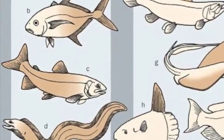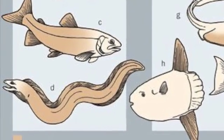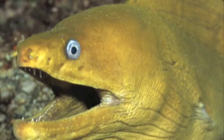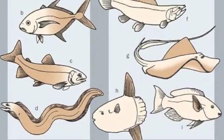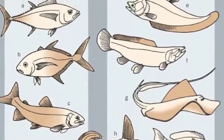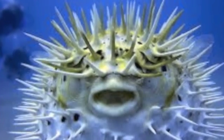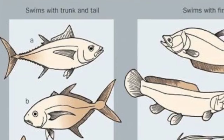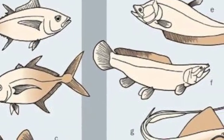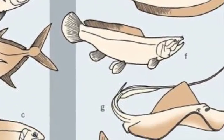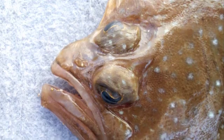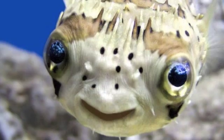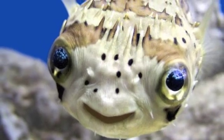Some fish are string-like, like the eel, or globe-shaped, like the puffer, or greatly flattened, like the flounder. Some fish lack eyes, and others lack certain features. A fish's appearance is greatly influenced by its environment.